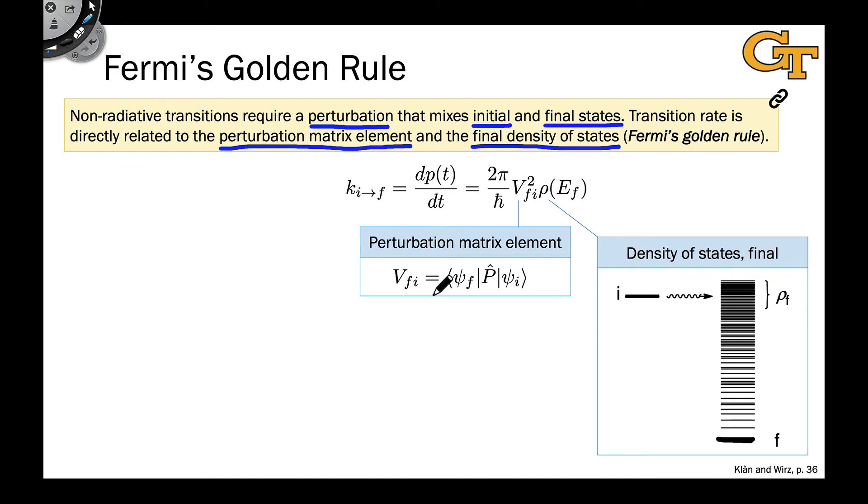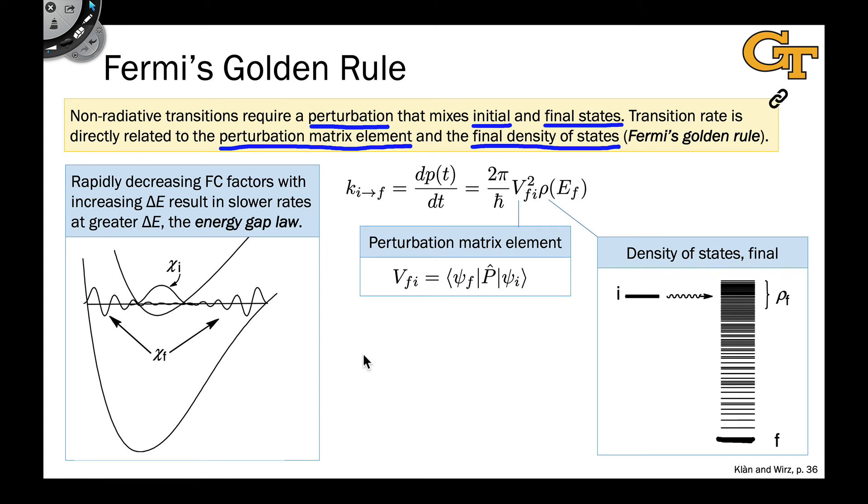However, by far the more important feature here is the perturbation matrix element. And within that, in particular, the vibrational piece, the Franck-Condon factors. As the energy gap between the initial and final states increases, we start having to use a much, much higher vibrational level of the lower state to match the ground vibrational level of the upper state in order to do a horizontal transition. You know, put another way, the ground electronic state has to be in this vibrational state with all of this waving at a very high energy,